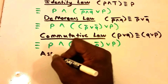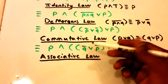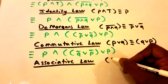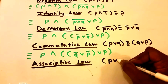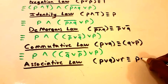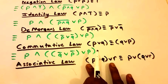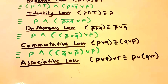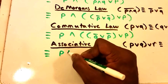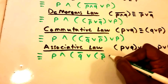Now we'll use the Associative Law. Sometimes people use the Commutative and Associative laws together. The Associative Law states that P∨(Q∨R) is logically equivalent to (P∨Q)∨R — we basically just move the parentheses. Rewriting our equation, we get: P ∧ (¬Q∨(¬P∨P)).